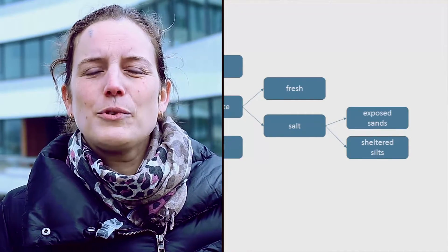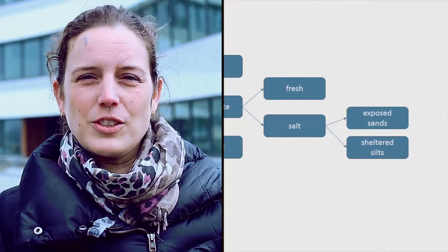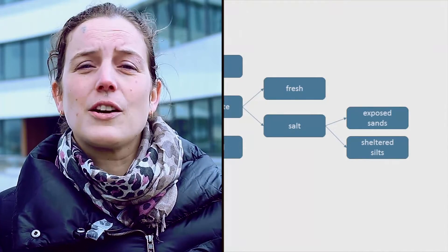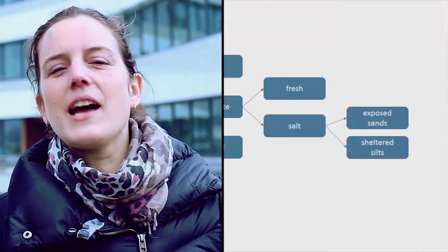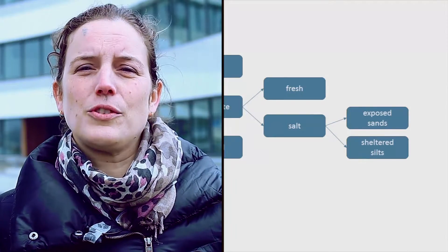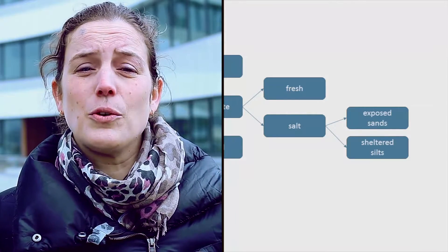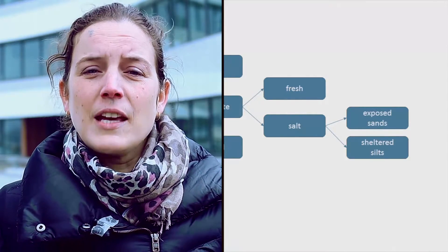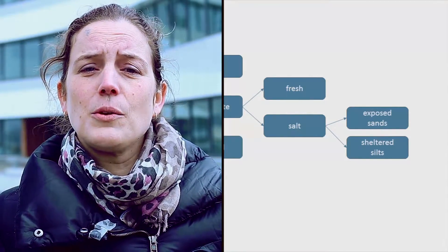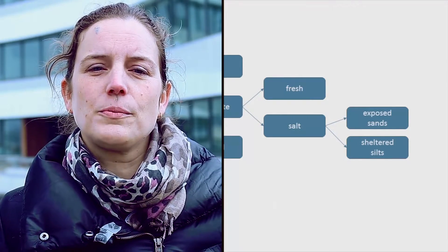In temperate zones along sheltered coasts, marshes can establish. Along sandy coasts characterized by high wave impact and low nutrient availability, marsh grasses cannot grow. Here we find sandy beach and dune systems, with their own characteristic species assemblages.